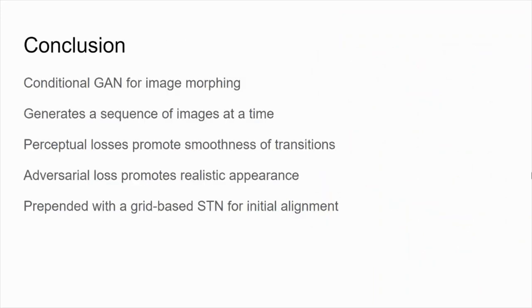In conclusion, we presented a conditional GAN framework for image morphing that generates a sequence of frames in one go, relying on a set of losses that promote smoothness of transitions and realistic appearances. Our system makes use of a prepended spatial transformer component for initial image alignment.